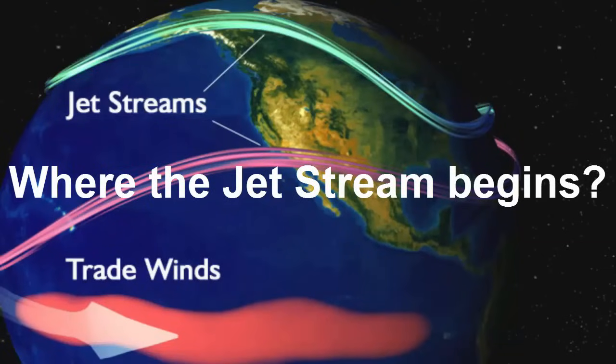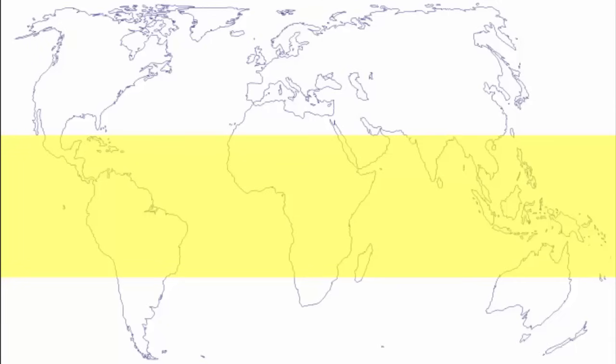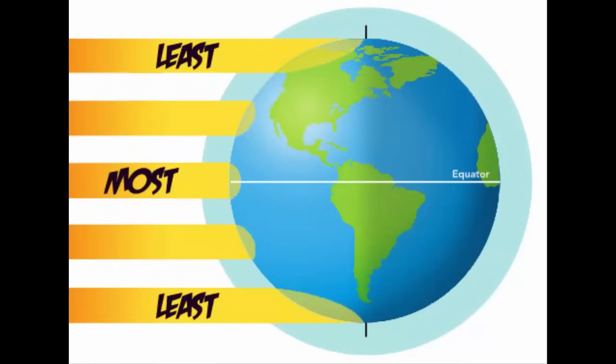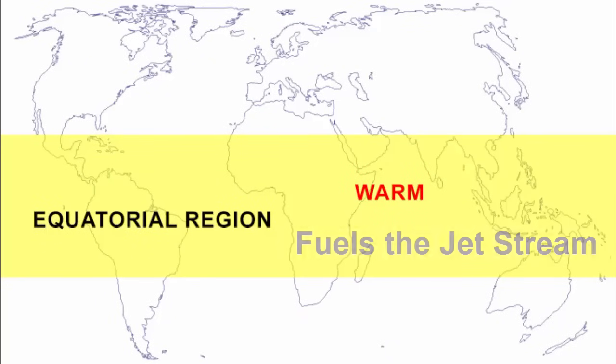Now coming to the most intriguing question: where does the jet stream begin? It all starts in the tropics around the equator. This region is warm because the sun's rays hit the earth's surface at a higher angle at the equator. Hence we can call this place the fuel for the jet stream.